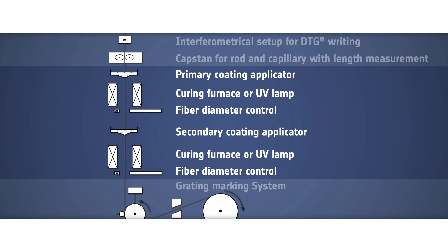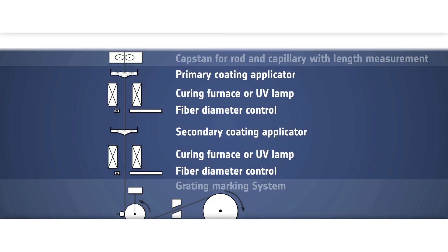FBGS uses the Ormiser coating for its patented draw tower gratings. It is applied directly onto the fiber while drawing.